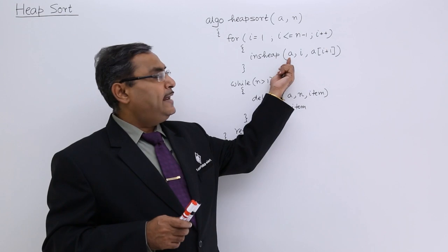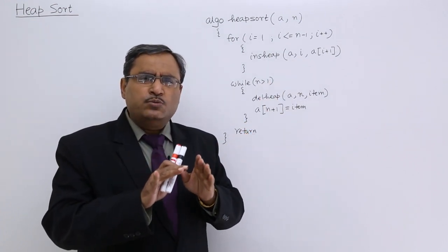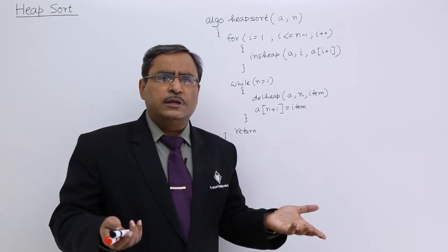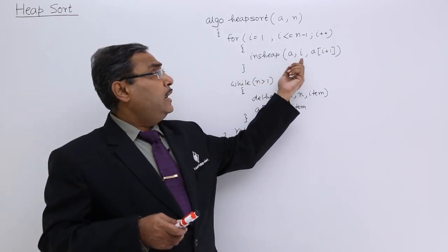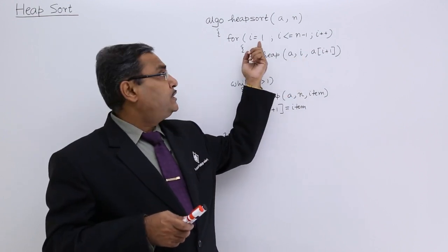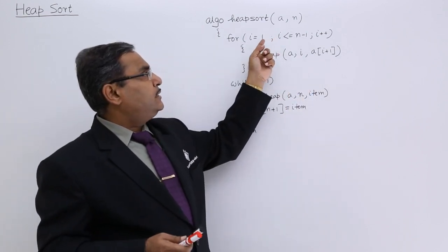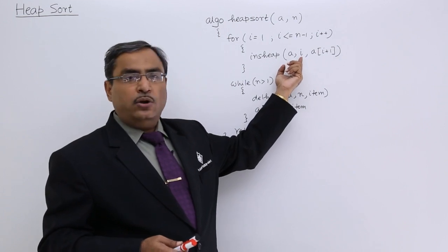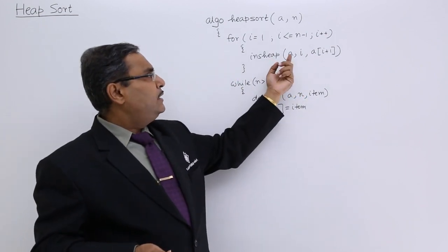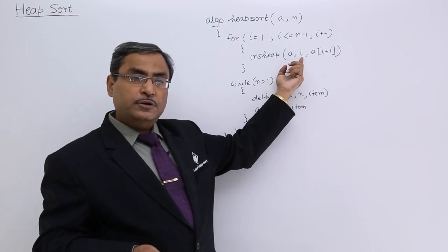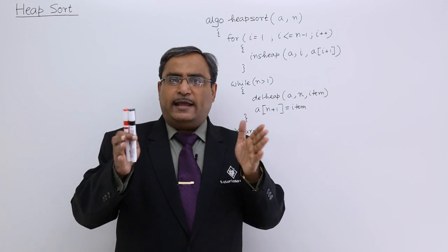Now here, what is happening? A is the name of the array. Initially i is equal to 1, so for the first location, the heap tree has been formed. Whenever there is one array containing only one data, obviously that is a heap tree, because there is no other data with which this data can be compared. So InSIP is called: A is the array, i is the location up to which the heap tree has been formed, and A[2] is the item to be inserted. In the next iteration i becomes 2, and A[3] is the item to be inserted. Then A[4], and so on. In this way we keep going, and we shall get a heap tree in array A up to location n.